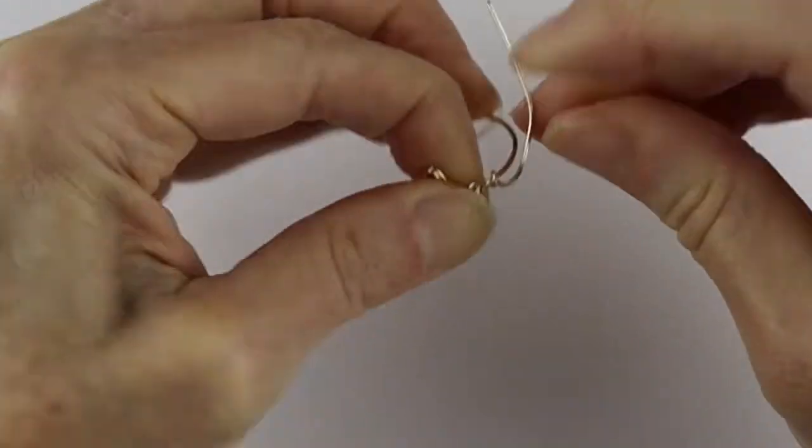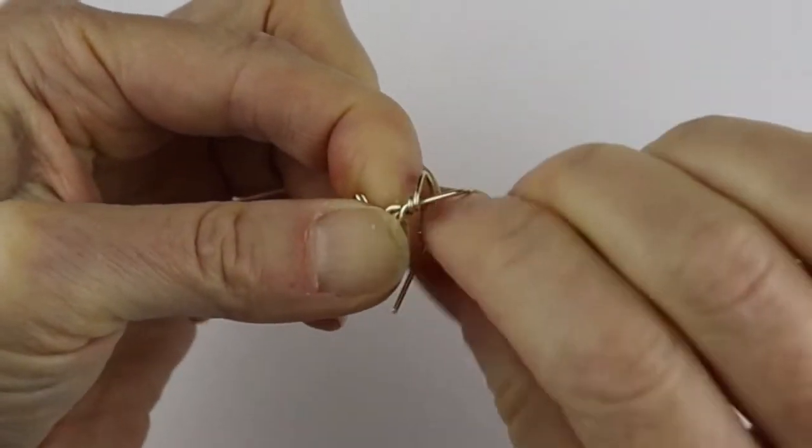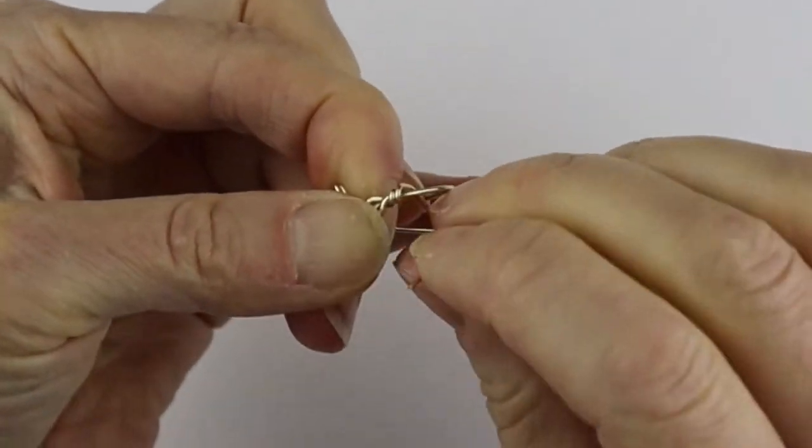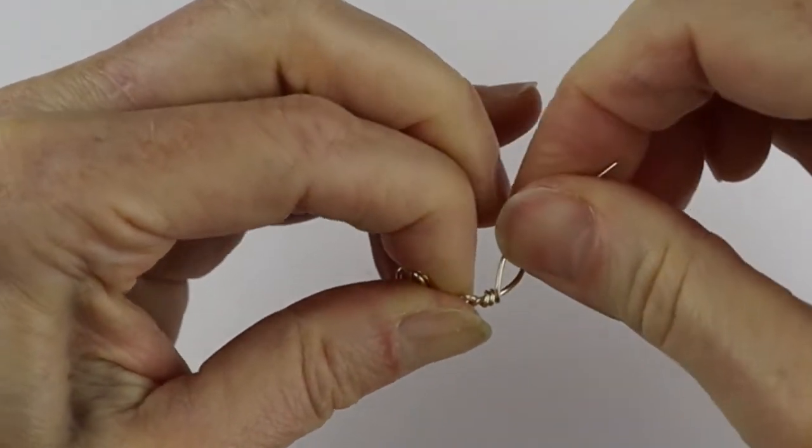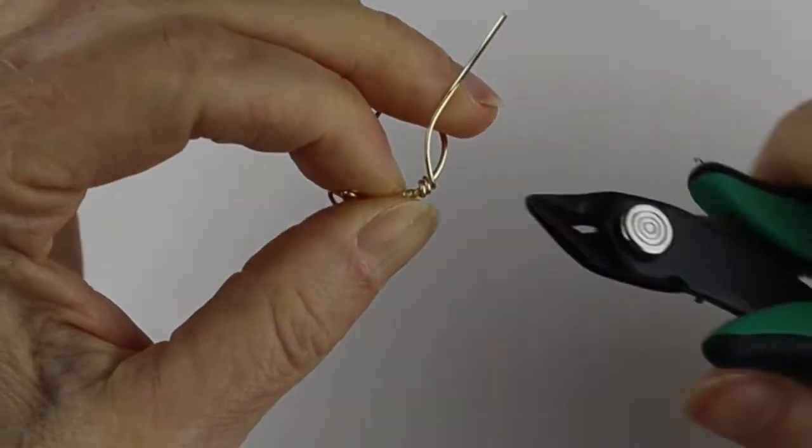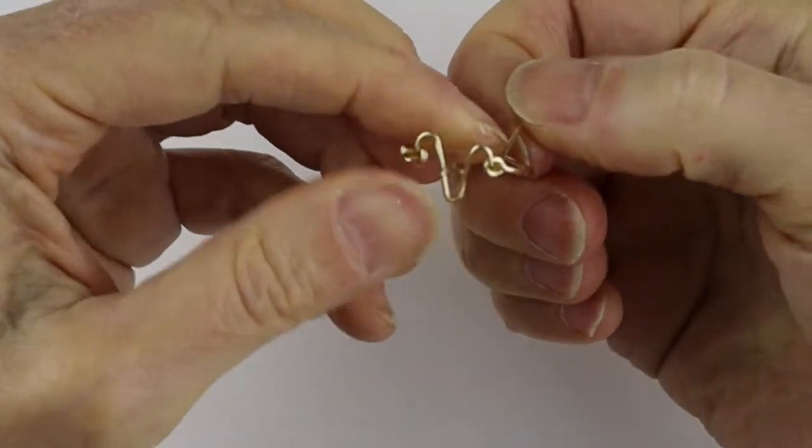We're just going to wind it around the band. This is nice because you can get some nice details in the letter by using a thinner 20 gauge wire, but yet the band is stronger because it's 18 gauge wire. So that's great.